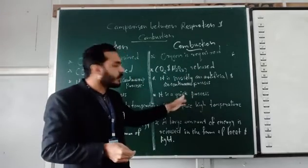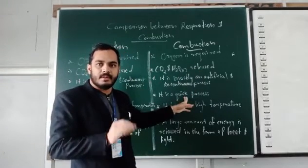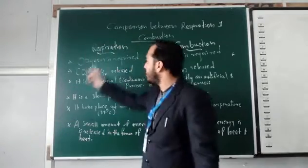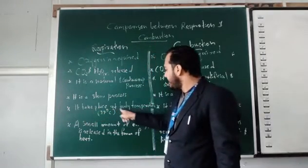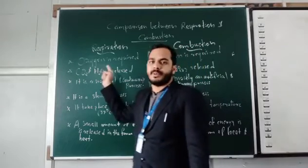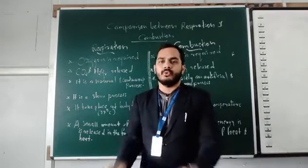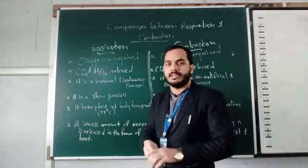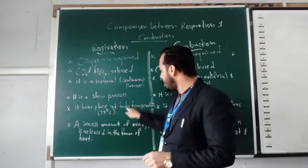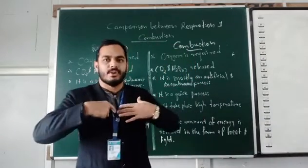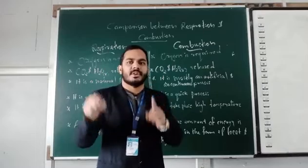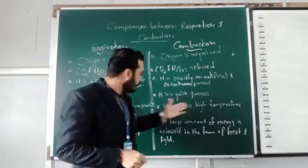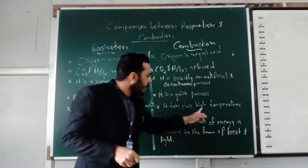Combustion is a quick process. Fifth point: Respiration takes place at body temperature. The minimum temperature required for respiration is 37 degrees Celsius, which is our normal body temperature. That is sufficient for the respiration process. Combustion, however, takes place at a much higher temperature.